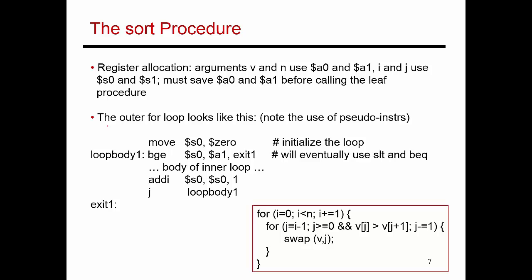Let's start by looking at the outer for loop. Recall that this sort procedure itself was being called with arguments v0 and n. We know that a0 has the address of v0, and a1 has the value of n. In addition to that, I'm declaring two variables i and j, which are going to be placed in registers s0 and s1. Now let's focus on this outer for loop.